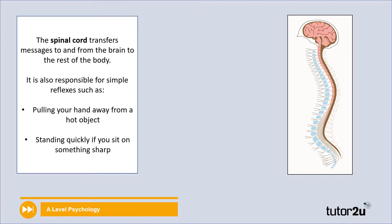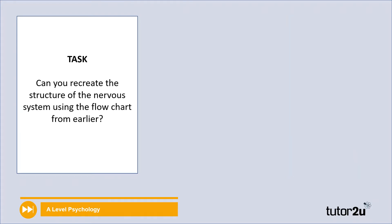Let's take a look at the spinal cord, the other component of the central nervous system. It transfers messages to and from the brain to the rest of the body. As you can see on the diagram, it's connected to the brain with nerves coming all the way off the spinal cord through our body. It's also responsible for reflexes, like pulling your hand away from a hot object, or standing quickly if you sit on something sharp, and for sensations such as pricking your finger on a needle. Now pause here for one minute while you recreate in your notes the structure of the nervous system flowchart, and see how you get on recalling the terms, structure, and order.